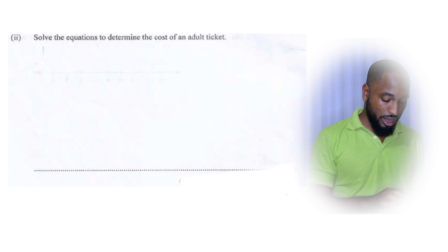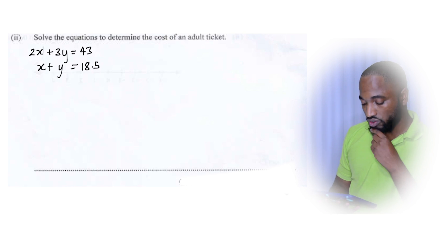Next part. So the next part, we actually have to solve it. Solve the equations. So let me write back them two equations now. Two X plus three Y equal 43. X plus Y equal 18.5. Label them. And let me do some elimination.